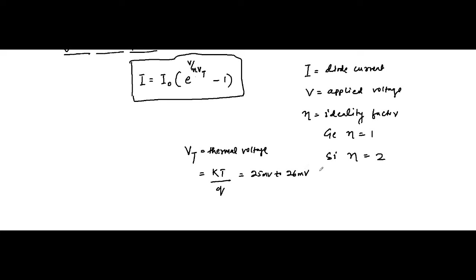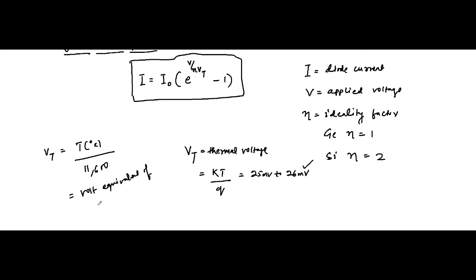The term Vt is called the thermal voltage, given by kT/q, where k is Boltzmann's constant, T is the temperature in Kelvin, and q is the electronic charge. At room temperature, Vt is normally taken as 26 millivolts. Another way to calculate Vt is using the formula T / 11600, where T is in degrees Kelvin. This is known as the volt equivalent of temperature.